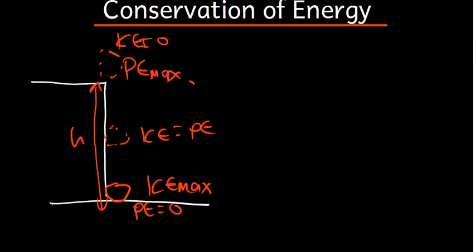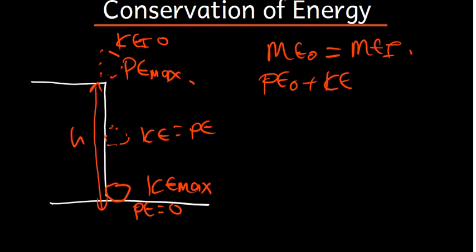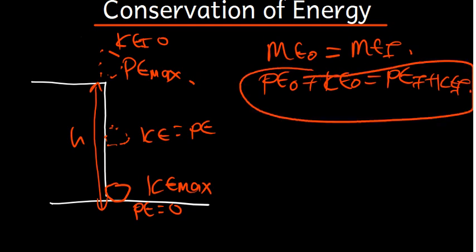In short, when talking about conservation of energy, the mechanical energy initial has to be equal to the mechanical energy final. This means: potential energy initial plus kinetic energy initial equals potential energy final plus kinetic energy final. This is the general formula for conservation of energy, which assumes no friction — meaning no energy is lost.